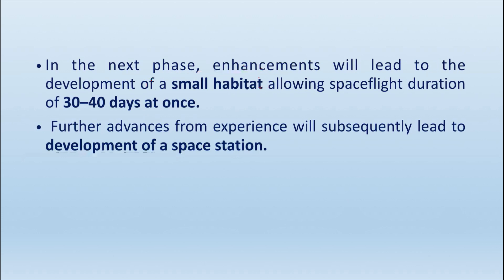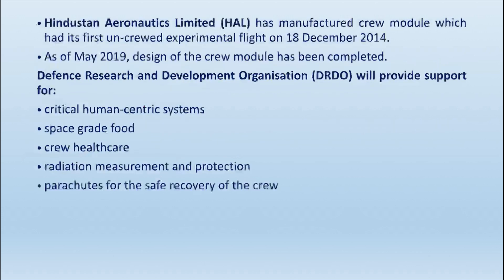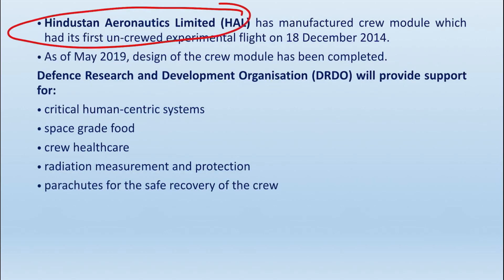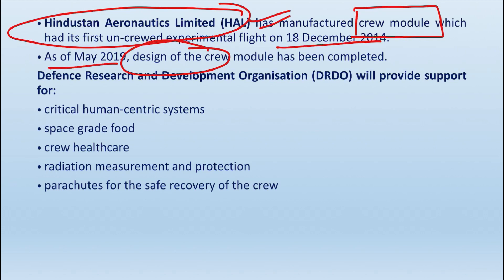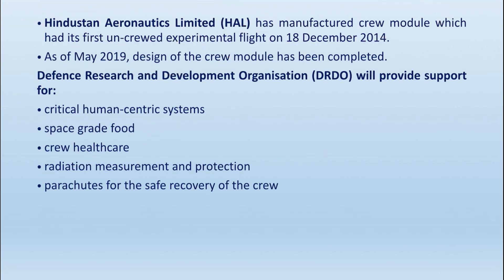Hindustan Aeronautics Limited, that is HAL, has manufactured the crew module, and the first uncrewed experimental flight began in 2014. The design was completed in May 2019. DRDO — the Defense Research and Development Organization — is also assisting, working on critical human-centric systems such as space food, crew healthcare, radiation measurement and protection, parachutes for safe recovery of the crew, and vital signs monitoring.